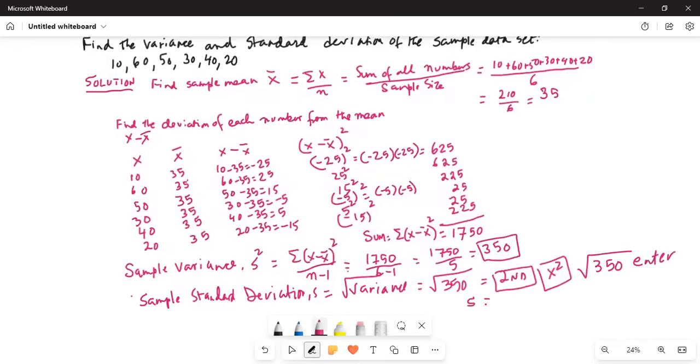So s is equal to 18.7, 18 point, yeah, 18.708. Okay, I will take care of this, 18 point, 18.708.